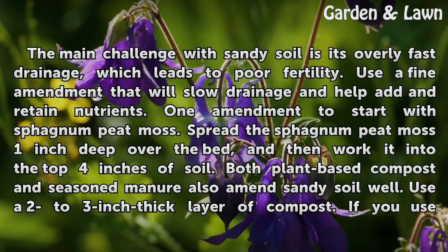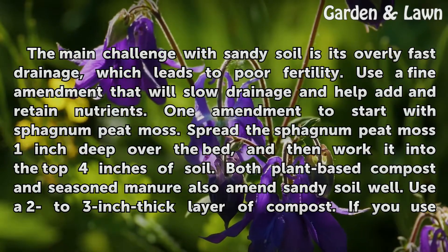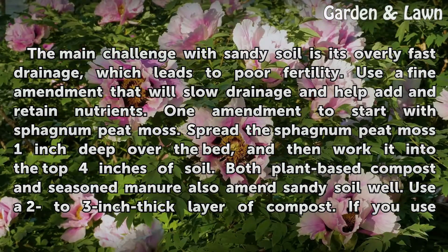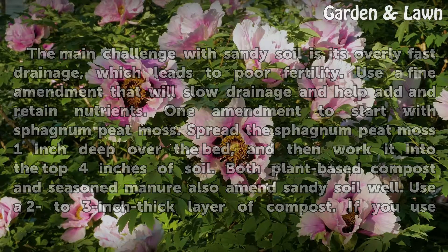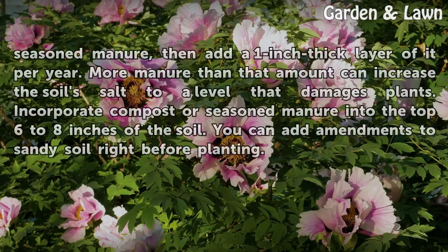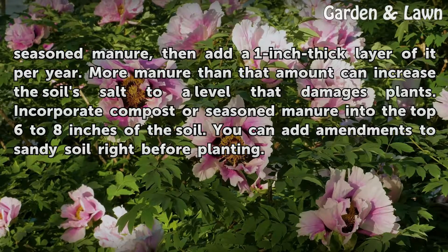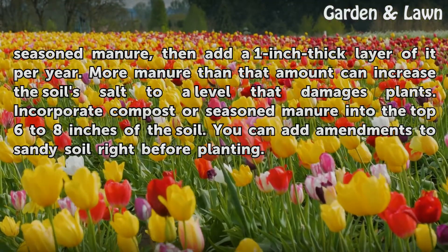The main challenge with sandy soil is its overly fast drainage, which leads to poor fertility. Use a fine amendment that will slow drainage and help add and retain nutrients. One amendment to start with is sphagnum peat moss — spread it one inch deep over the bed and work it into the top 4 inches of soil. Both plant-based compost and seasoned manure also amend sandy soil well. Use a 2 to 3 inch thick layer of compost, or a 1 inch thick layer of seasoned manure per year — more manure can increase soil salt to a level that damages plants. Incorporate compost or seasoned manure into the top 6 to 8 inches of soil.